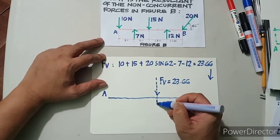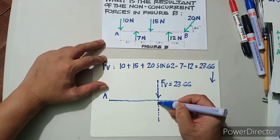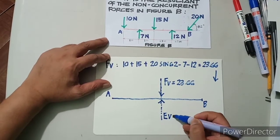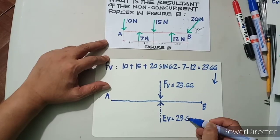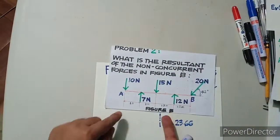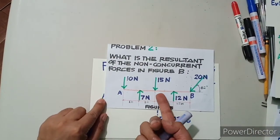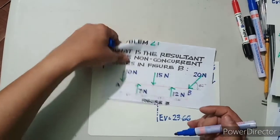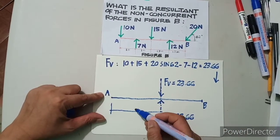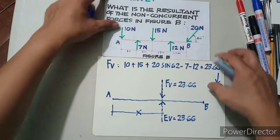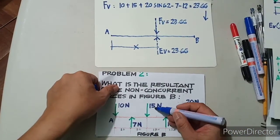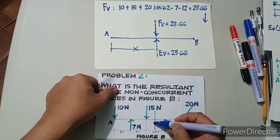Now here we have an equilibrium. That is your force vertical — we have an equilibrium equivalent to 23.66. It is the force that is trying to balance. If this is a load, you are able to balance the force here. It is supposed to be located at a certain distance X, and how do we locate that distance X? Since it is trying to balance, it is somewhere here — that is your equilibrium.